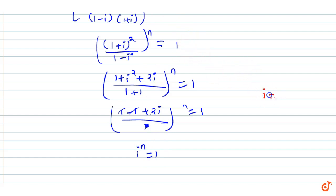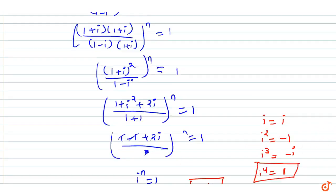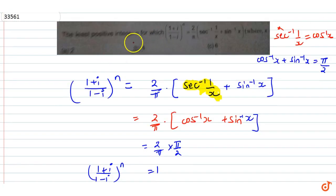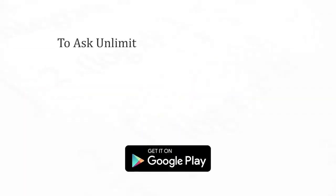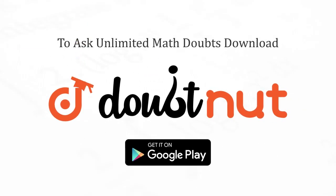Now we check powers of iota: iota¹ = i, iota² = -1, iota³ = -i, iota⁴ = 1. Since iota⁴ = 1, comparing with iota^n = 1, the least positive integer value of n is 4. The answer is n = 4.